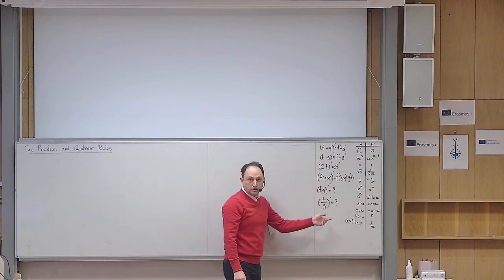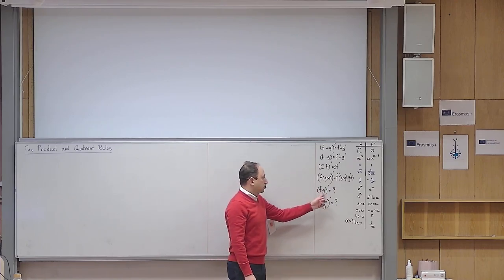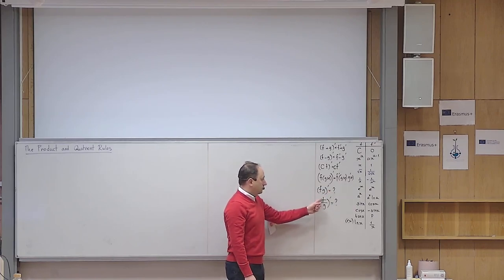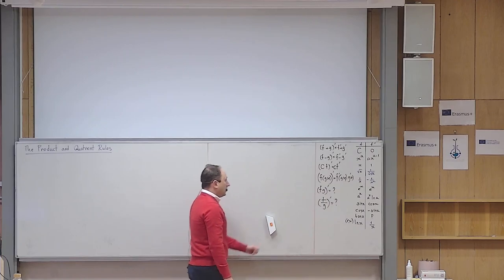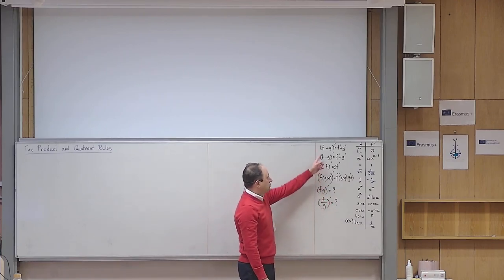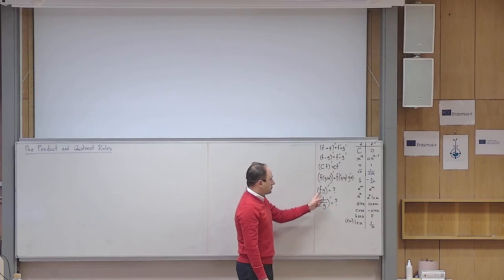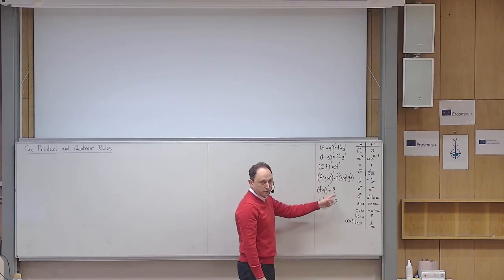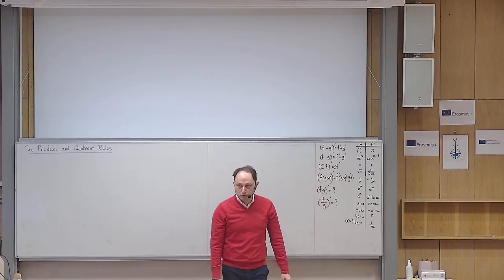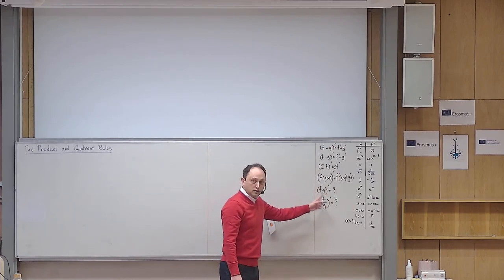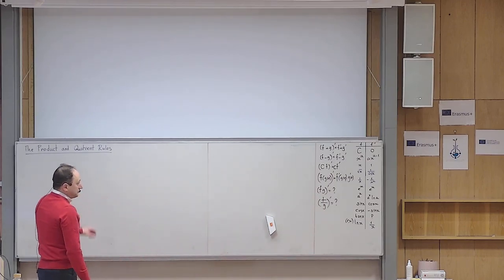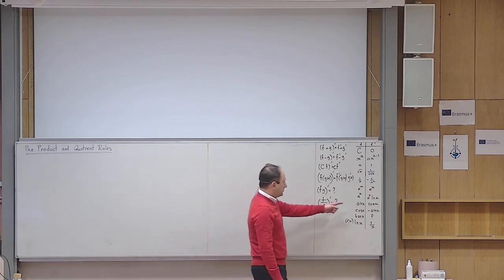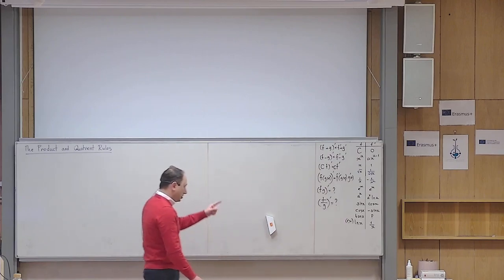Today we want to learn: if I have the product of two functions and want to differentiate it, what is the rule? And if I have the quotient — the fraction of two functions — how can I differentiate that? The answer is not simply f' multiplied by g'. It is a little more complicated. Similarly, it is not f' over g'.